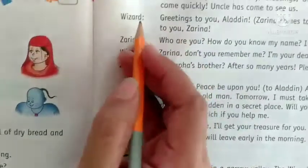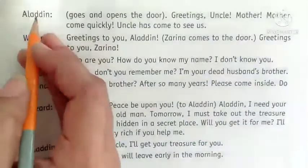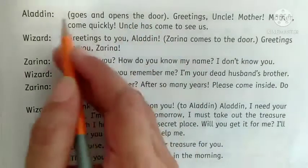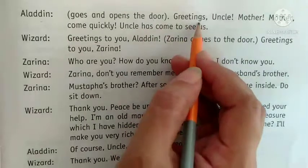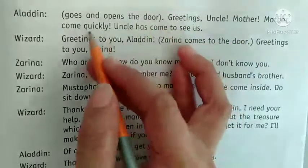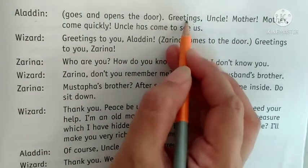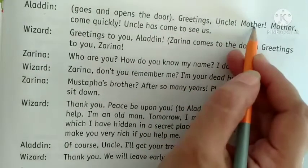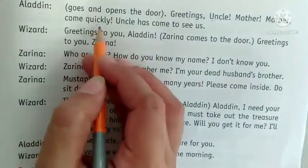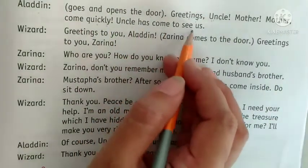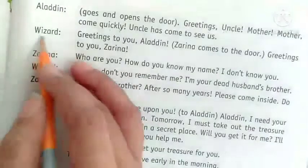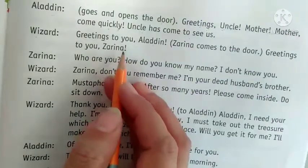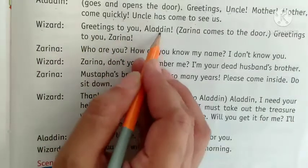Aladdin goes and opens the door. 'Greetings, uncle. Mother, mother come quickly! Uncle has come to see us.' Aladdin ne uncle ko greet kiya aur uski mother ko bola: 'Mother, come quickly — tumh jaldi ao. Uncle has come to see us — uncle humko dekhne ke liye aaye hain.' Wizard says: 'Greetings to you, Aladdin.' Zarina comes to the door. 'Greetings to you, Zarina.'